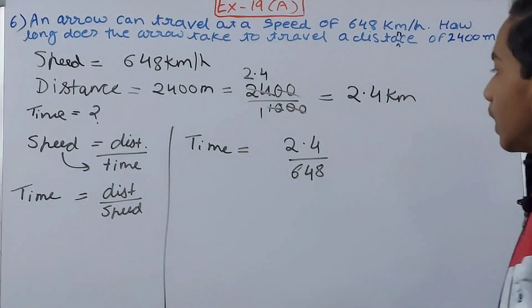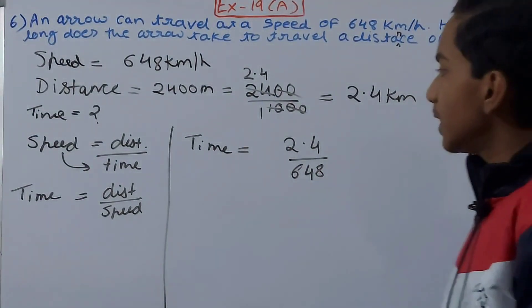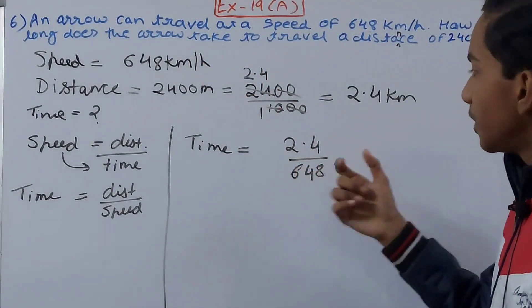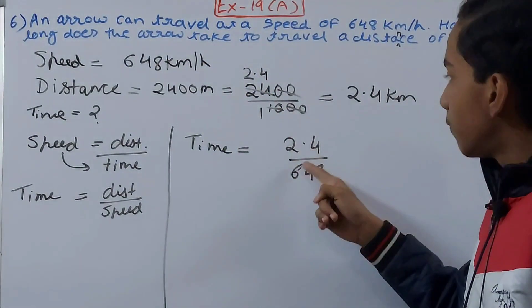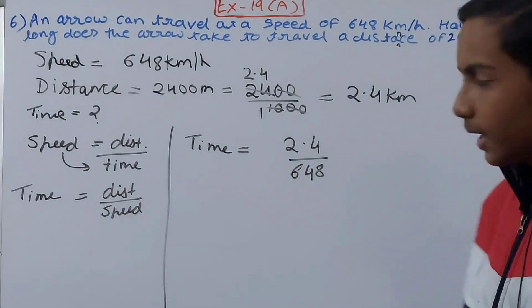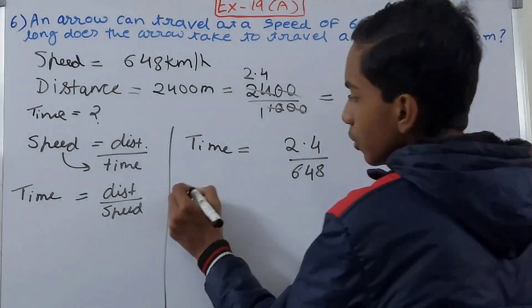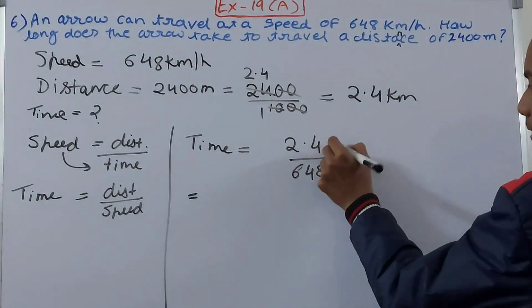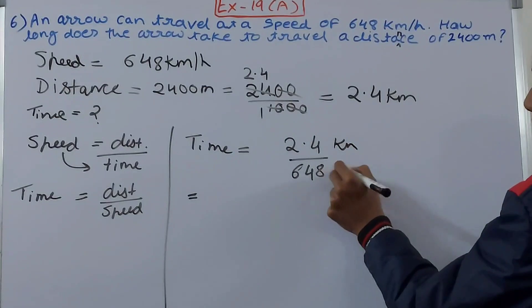Now you see that this is the speed that we have put here, kilometer per hour, and 2.4 kilometers is the distance. Now solve this thing up. And remember, keep this thing in mind about the units. This is kilometer and this is kilometer per hour, so kilometer and kilometer will cut, so the time that we will get will be in hours.